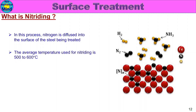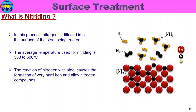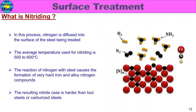The nitriding temperature used is 500 to 600 degrees centigrade. At this temperature, the reaction of nitrogen with steel causes the formation of very hard iron and alloy nitrogen compounds. In the process, nitrogen reacts with the metal surface to form these hard iron and alloy nitrogen compounds. The resulting nitride case is harder than tool steels or carburized steels.